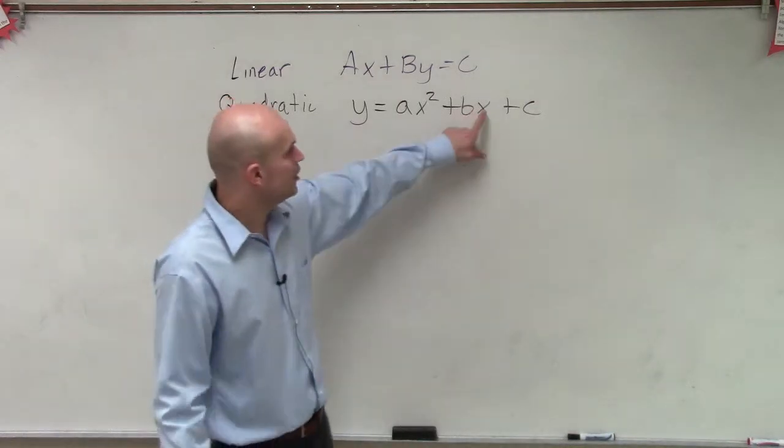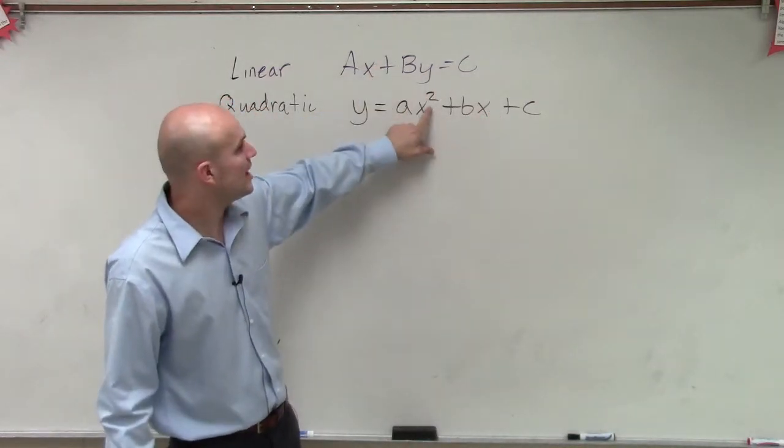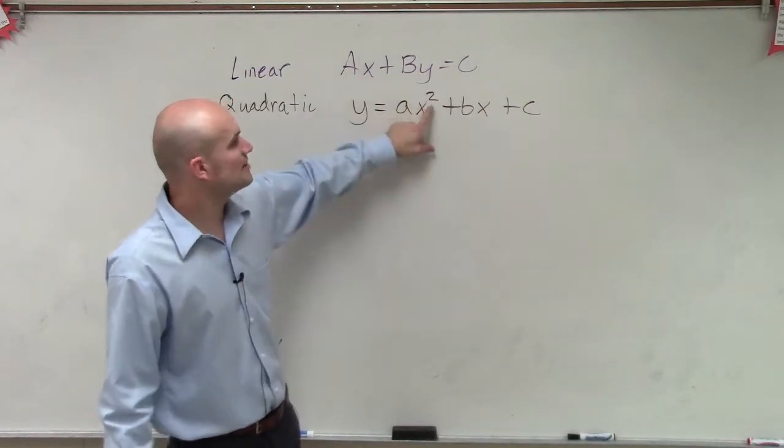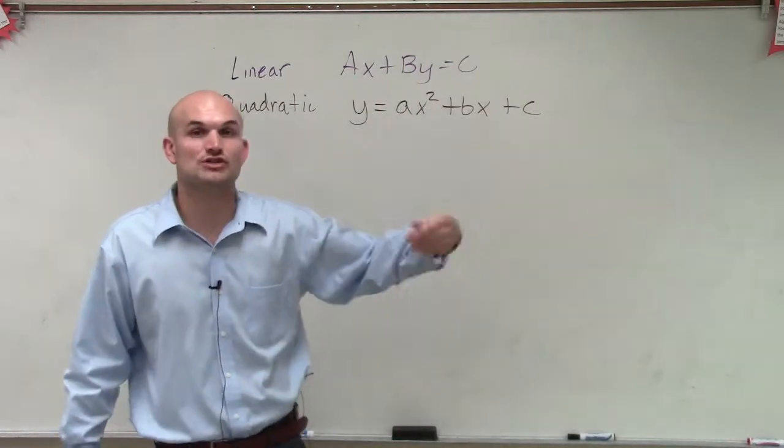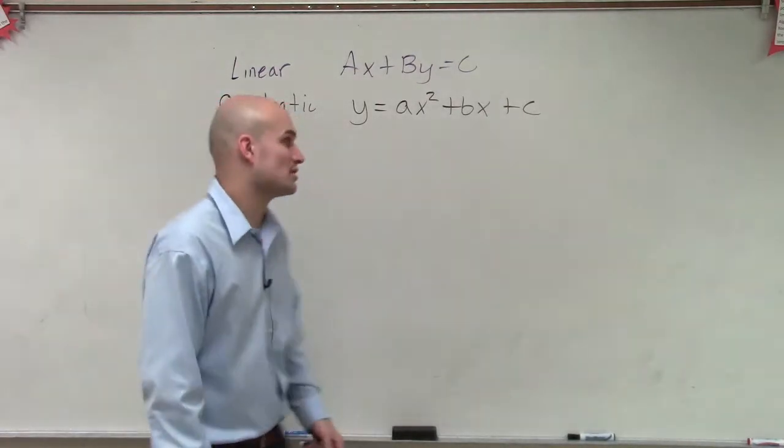Now notice in a quadratic, we have one linear term, which is like our linear term here. And we also have, well, actually two linear terms, but then we also have a squared term. And that's where we're going to get our term quadratic. And then we're also going to have our c as our constant.